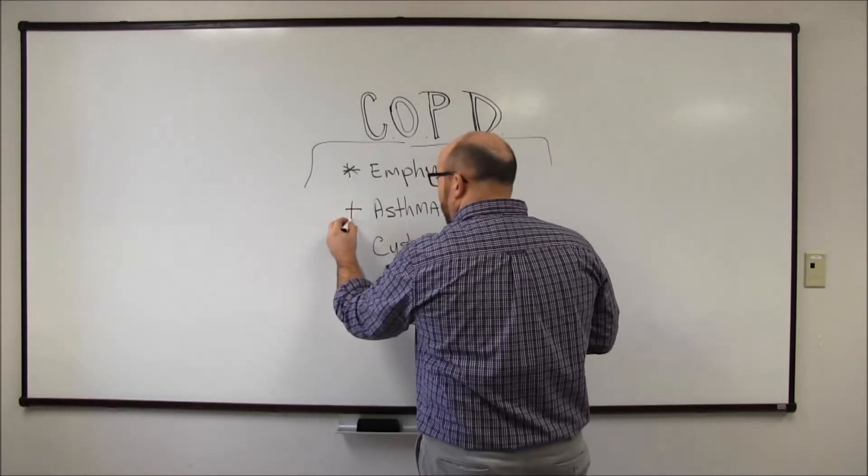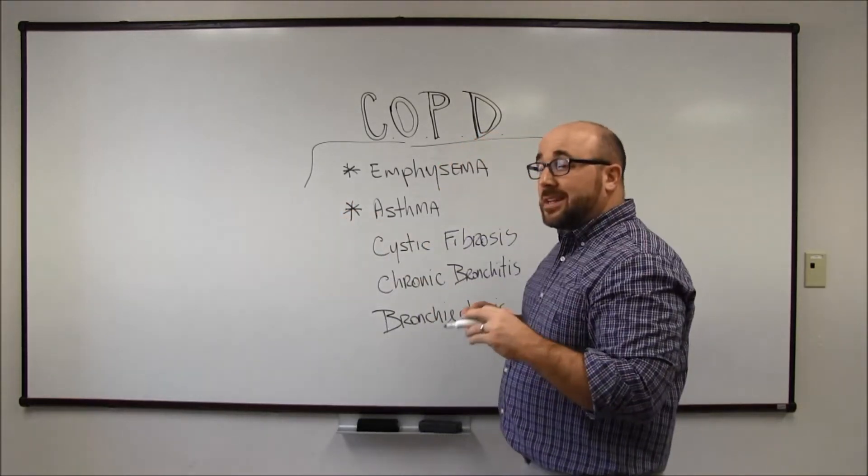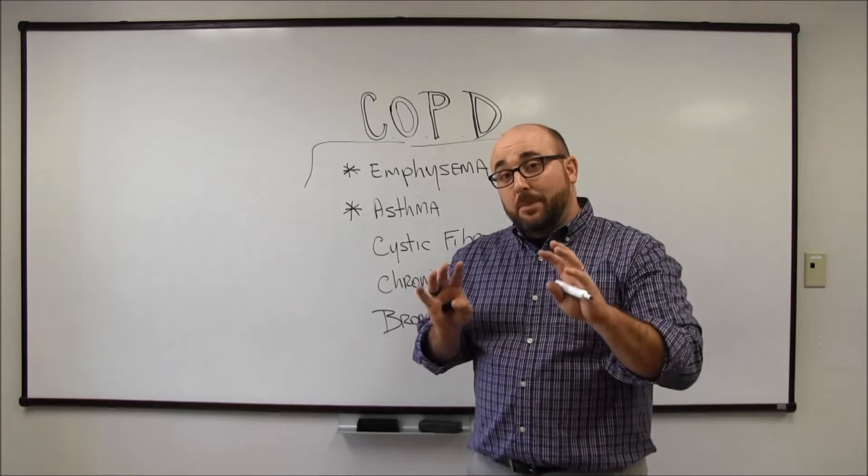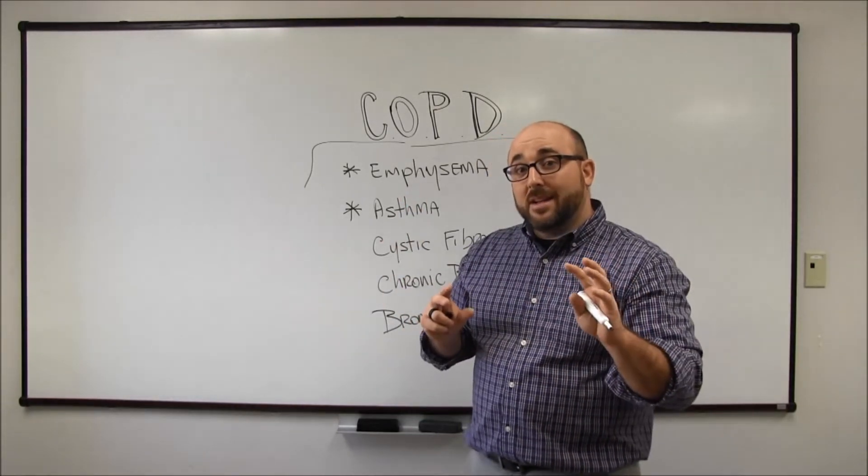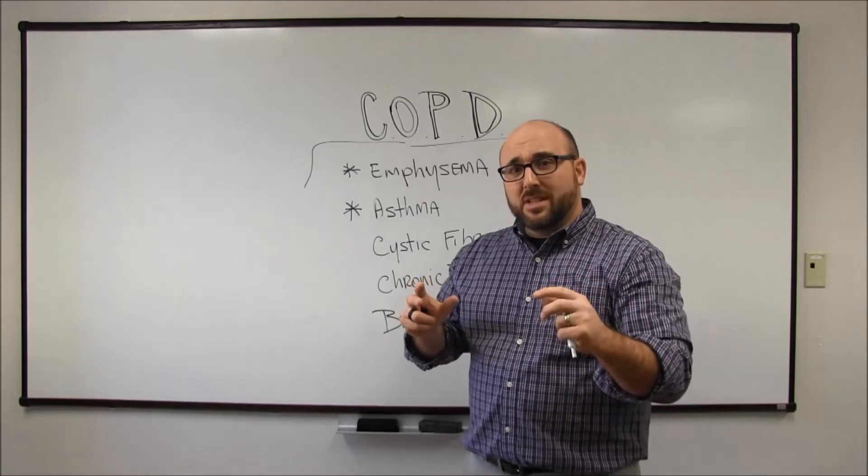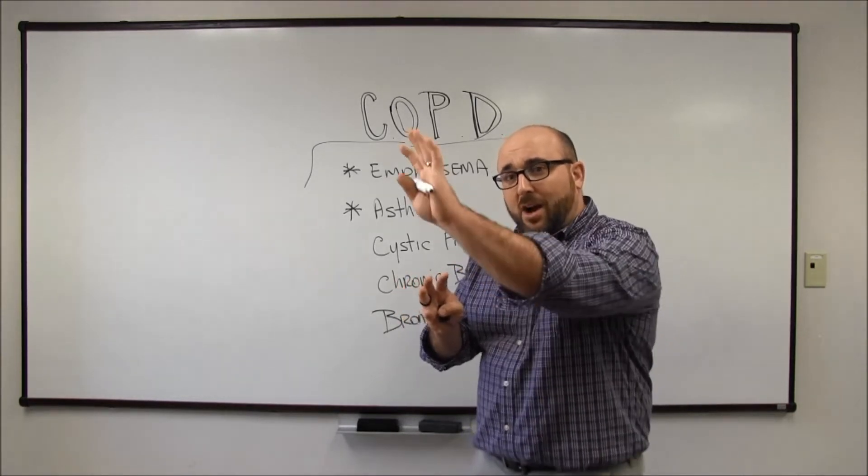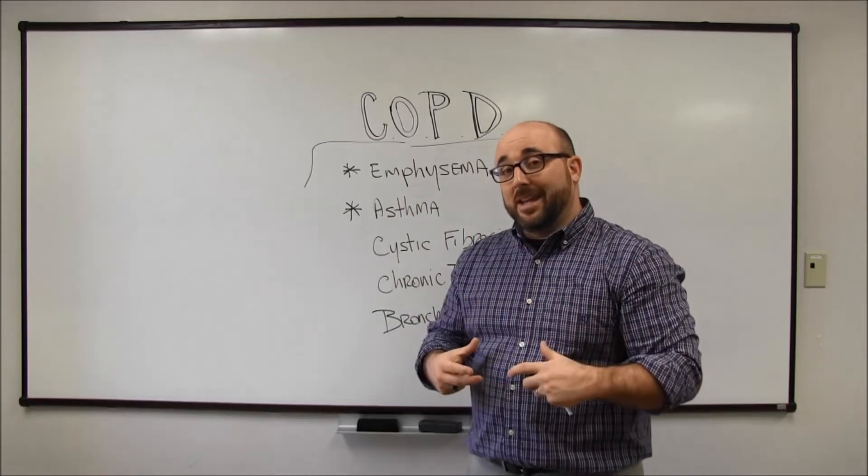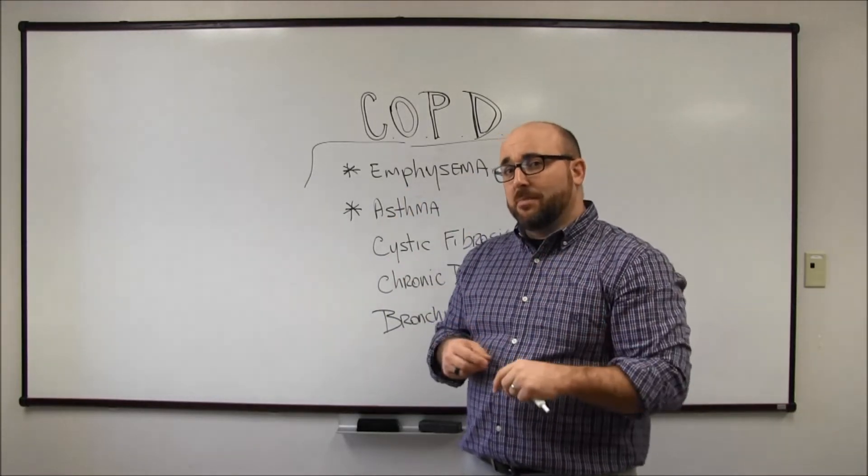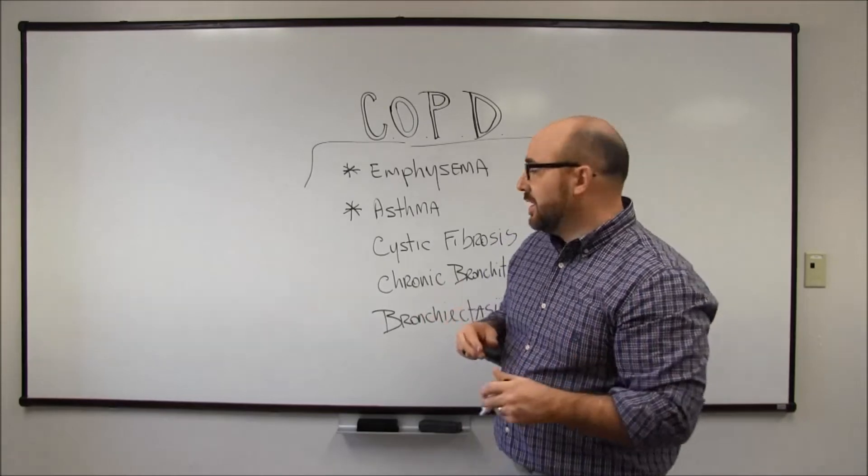Another one is asthma. So asthma is an interesting disease because it actually is an obstructive disease, so it's a type of COPD if it's chronic, and then it's also a restrictive disease. So you have trouble getting air out, and then you also with asthma have trouble getting air in. So it's kind of a combination, but it's one that falls into both categories.